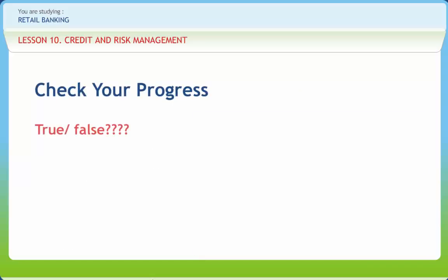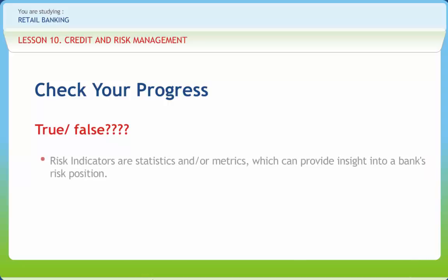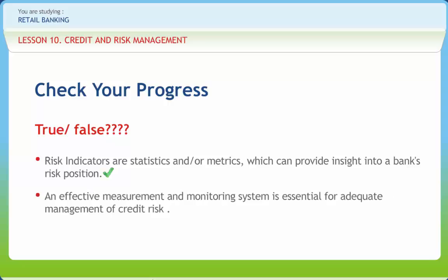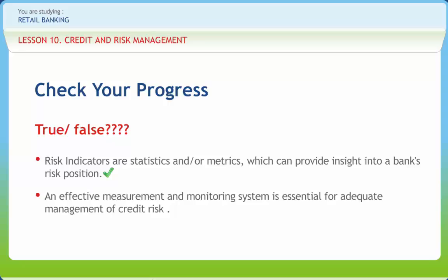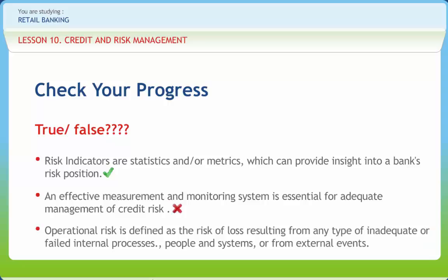Let us check if we have understood the various concepts discussed in this lesson. Risk indicators are statistics and/or metrics which can provide insight into a bank's risk position—Right. An effective measurement and monitoring system is essential for adequate management of credit risk—Wrong. Operational risk is defined as the risk of loss resulting from any type of inadequate or failed internal processes, people and systems, or from external events—Right.